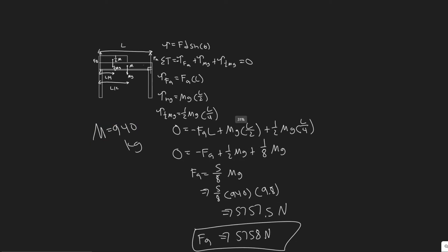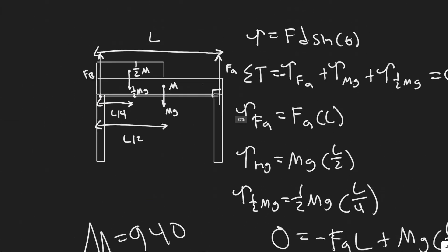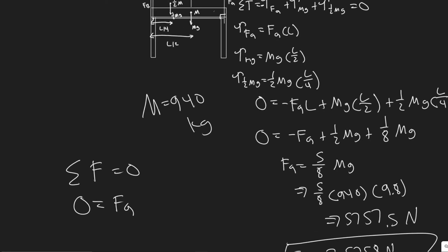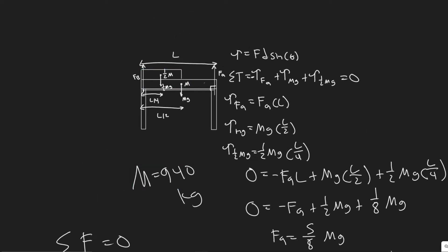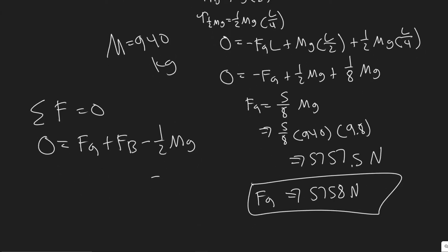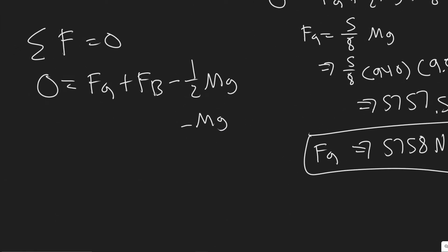Now to solve for FB, we sum the forces in the Y direction. Since the system is not moving, the sum of forces equals zero. So FA plus FB minus (1/2)Mg minus Mg equals zero. Solving for FB: FB equals (1/2)Mg plus Mg minus FA. Substituting FA as 5/8 Mg: FB equals (1/2)Mg plus Mg minus (5/8)Mg.